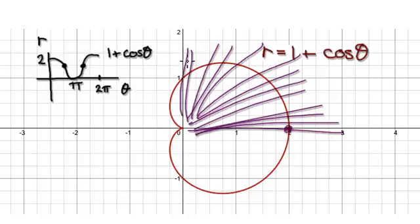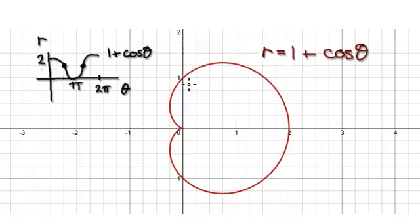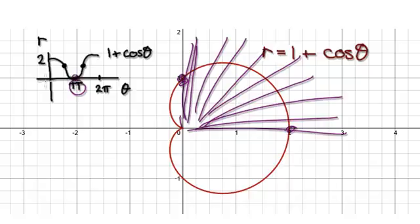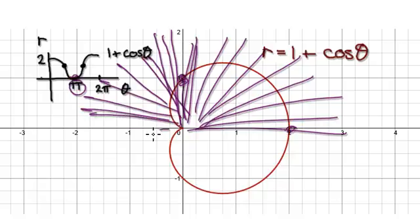As you increase theta, by the time theta gets to pi over two, the radius will be one. You start here, increase it, and by the time you get to pi over two you have a radius of one. Then by the time you get to pi, the radius will be zero — that's this point here.